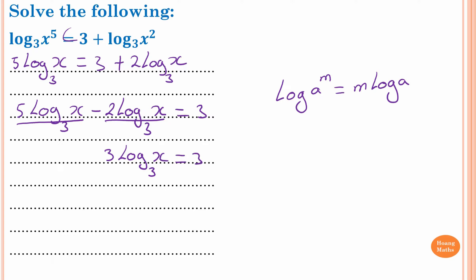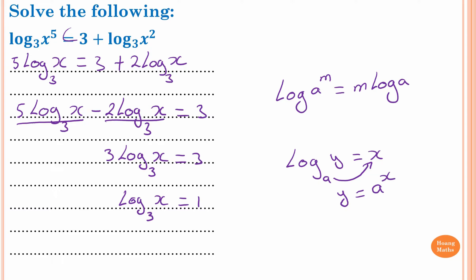So I divide by 3 on both sides, so that gives log base 3 of x is equal to 1. Then to unlock it — remember log base a of x equals y means y equals a to the power of x — so this 3 just pushes the 1 up, so therefore x is equal to 3 to the power of 1, but 3 to the power of 1 is 3. So therefore x is equal to 3.